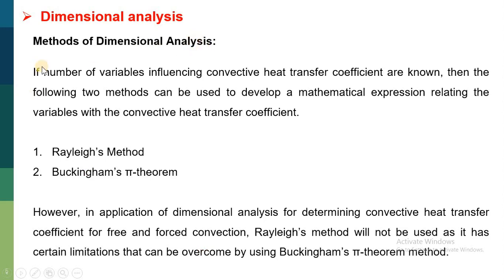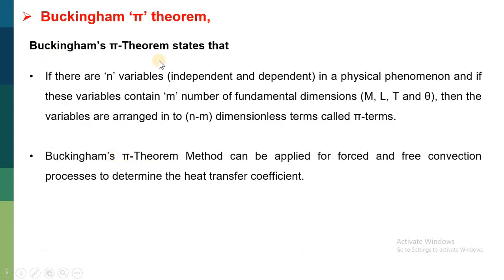What are the different methods of dimensional analysis? If the number of influencing variables in convective heat transfer coefficients are known, the following two methods can be used to develop a mathematical expression. Number one is the Rayleigh method, and the second method is known as Buckingham's Pi theorem. The Rayleigh method is not much used because of certain limitations, but these limitations are overcome by Buckingham's Pi theorem method.